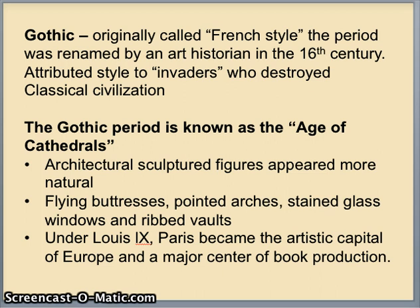Architectural sculpted figures appear more natural now as we get away from the stiffness of the Byzantine and medieval time period. We have flying buttresses, pointed arches, stained glass windows, and ribbed vaults that helped to make these cathedrals possible. Under Louis the Ninth, Paris became the artistic capital of Europe and a major center of book production.